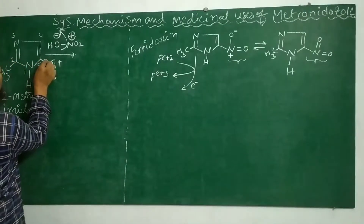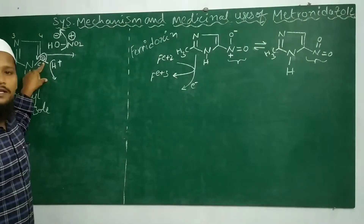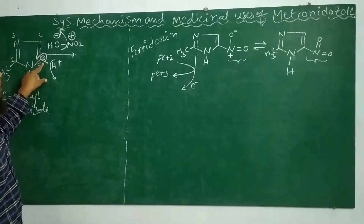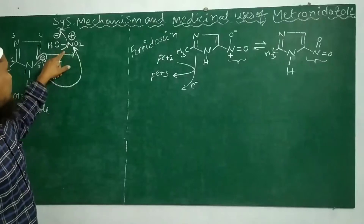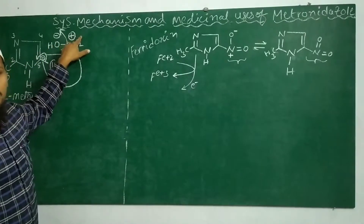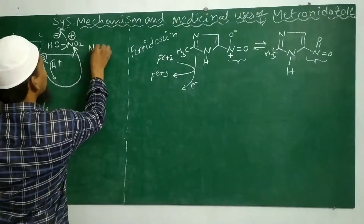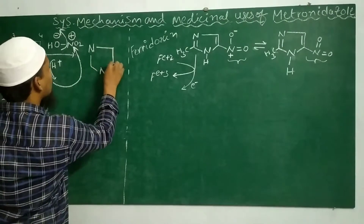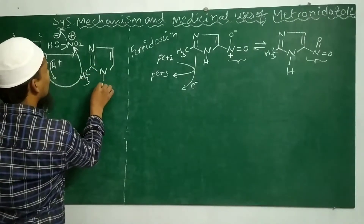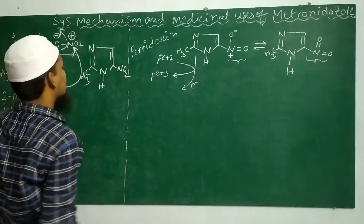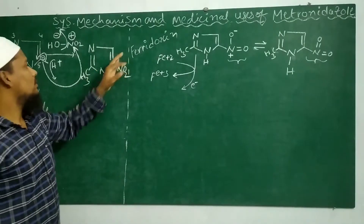That is why it is called an electrophilic substitution reaction. The remaining electrons are taken back by the carbon, so the carbon gets a negative charge because the electron density on the carbon increases. This electron-rich carbon donates electrons to the electron-deficient nitro group, forming a carbon-nitrogen single bond. The resultant molecule is 2-methyl-5-nitroimidazole.